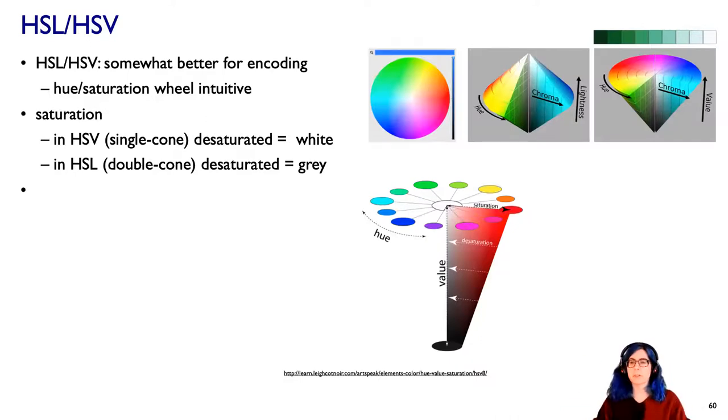There's another model called hue saturation lightness, which is a double cone model, as if we took two cones and smacked them together. In this one, we've got the tip of the top cone is pure white, the tip of the bottom cone is pure black, and then halfway in between is gray. So in this color space, desaturated is gray rather than white.